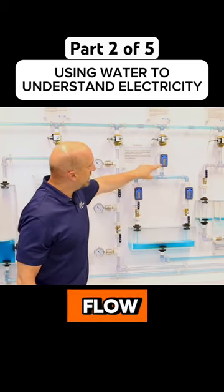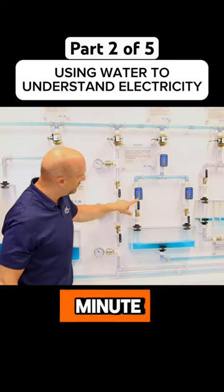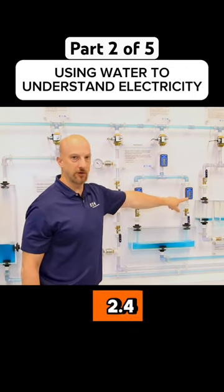So if I measure the flow, I see 4.8 gallons per minute, 2.4 gallons per minute, 2.4 gallons per minute.